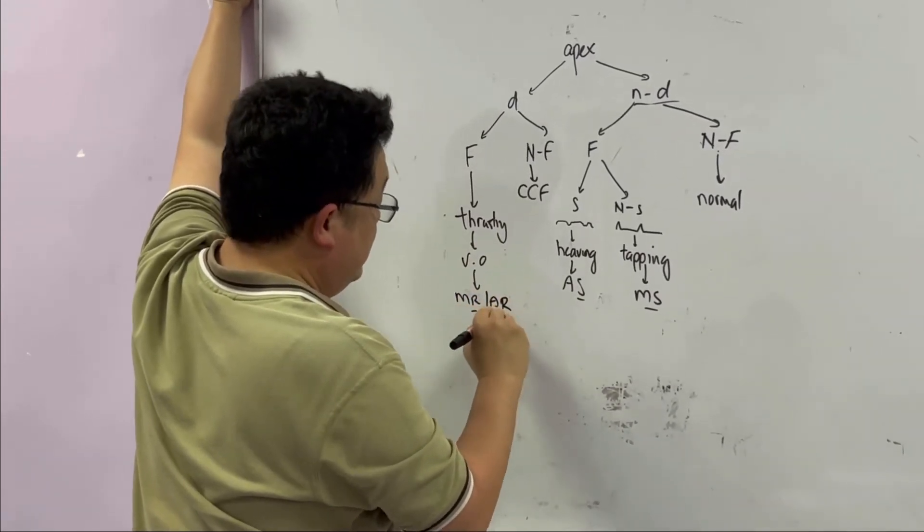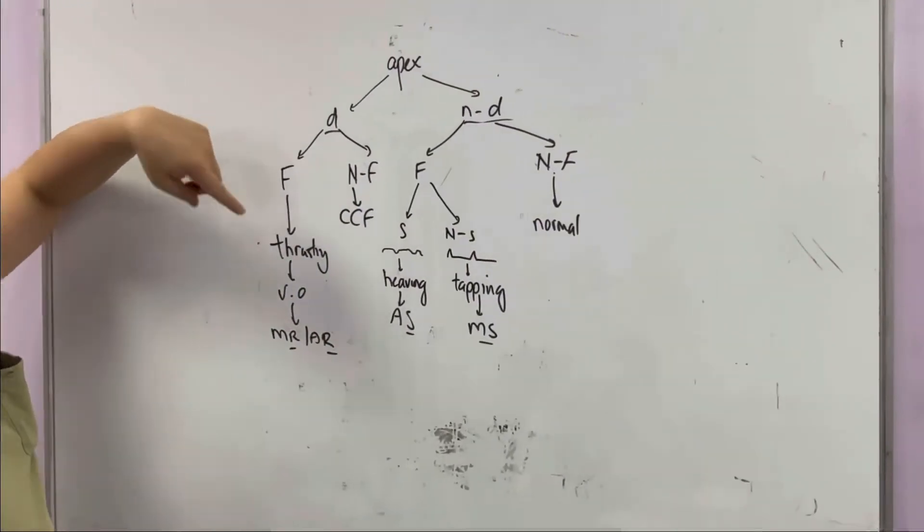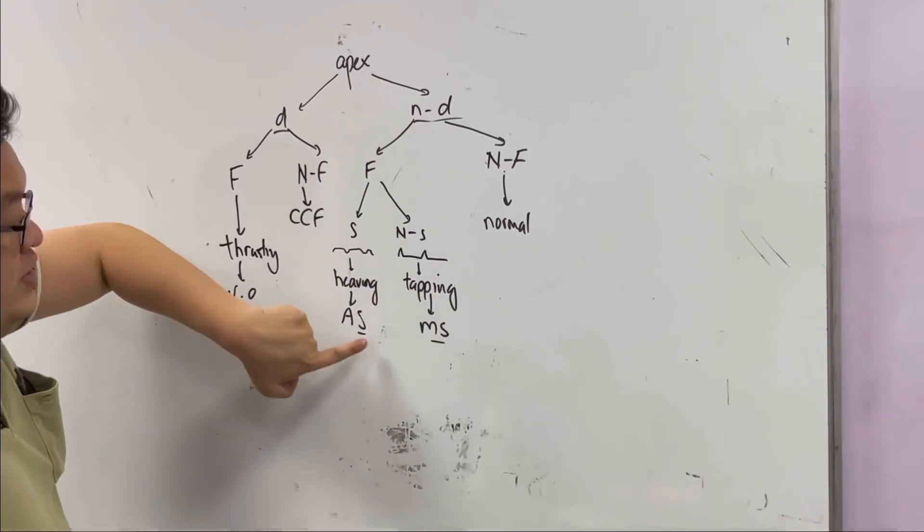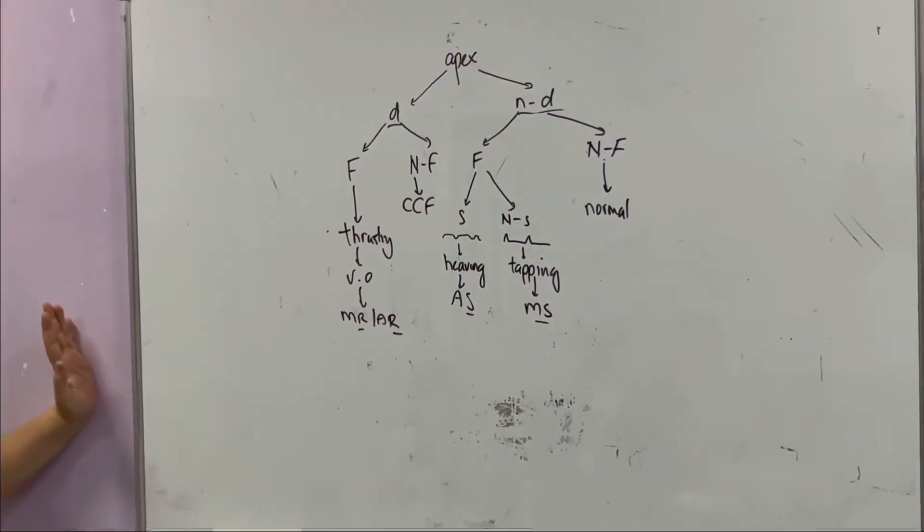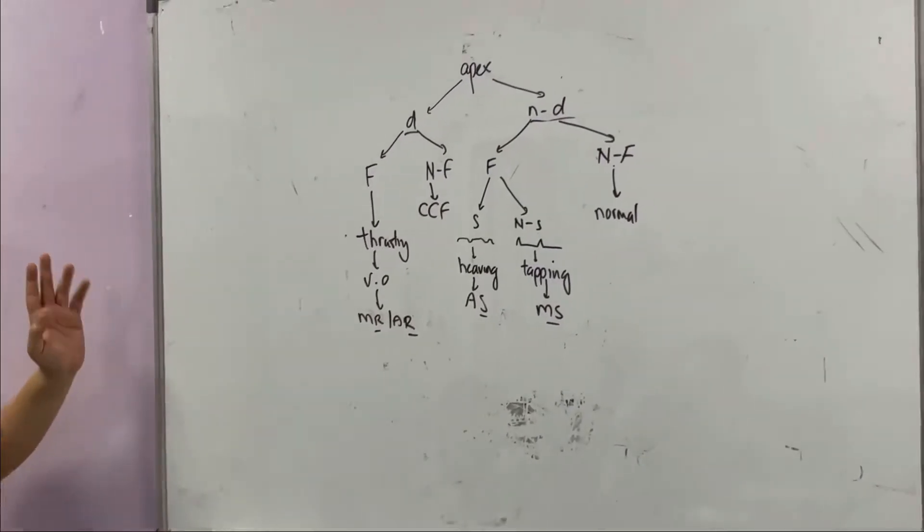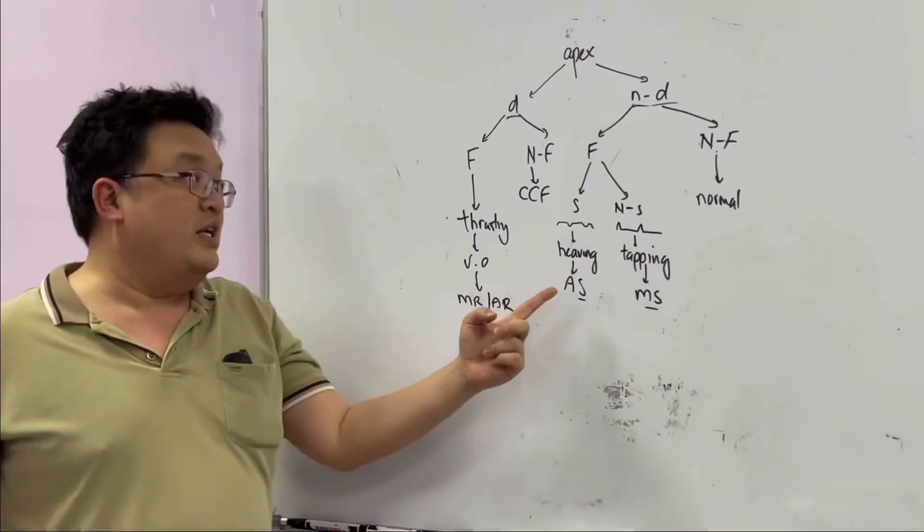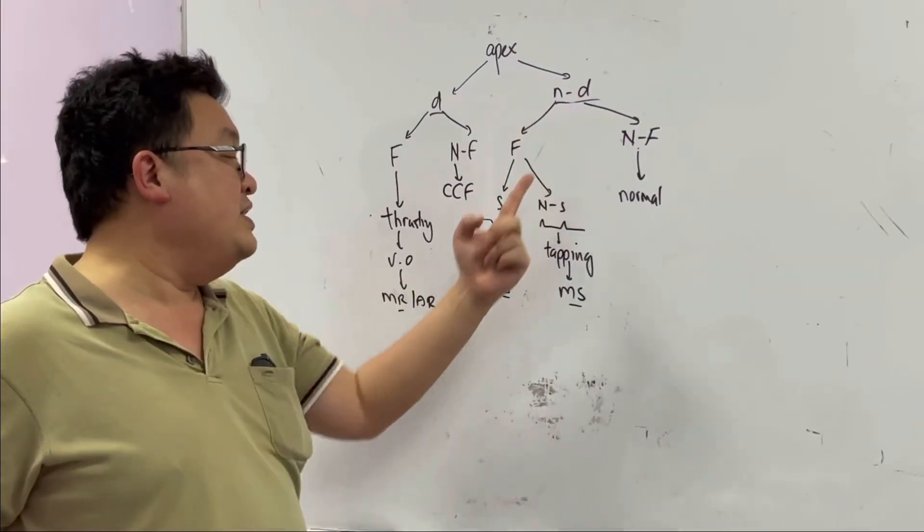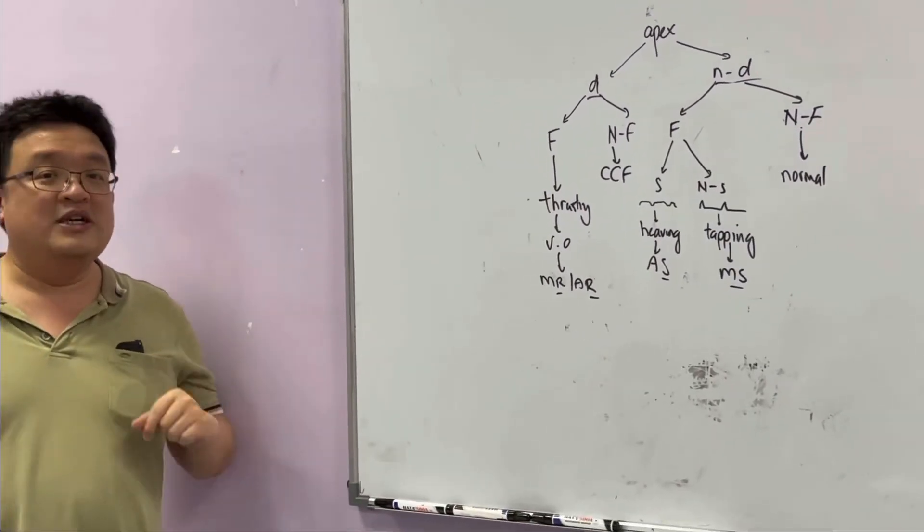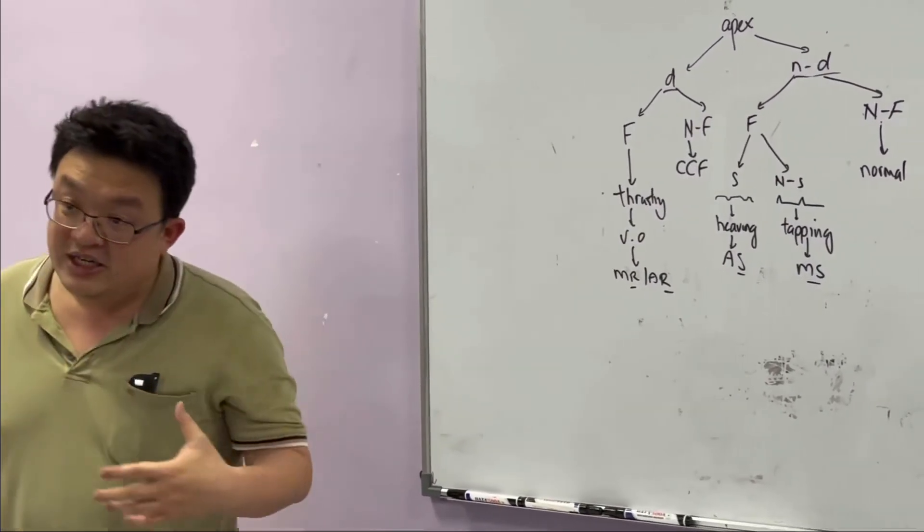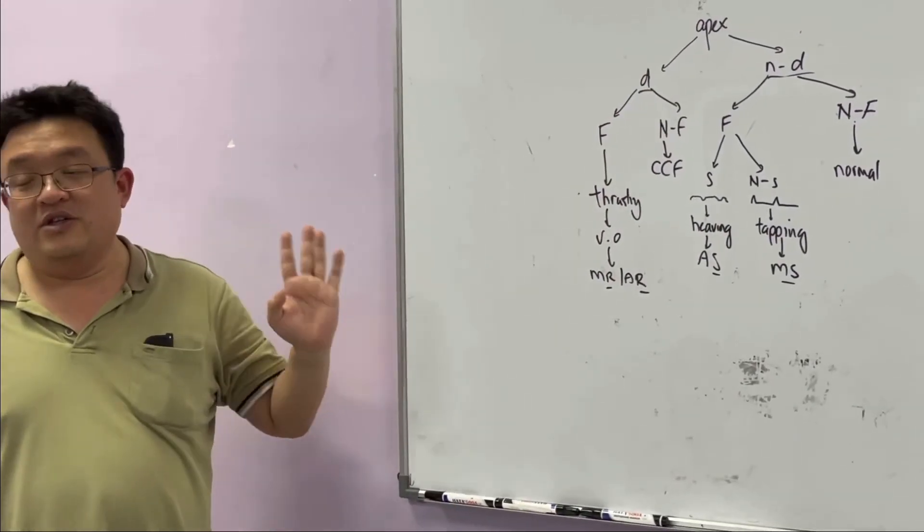Sometimes if you have an aortic regurgitation coexisting with an aortic stenosis, which one is dominant? You'll see the displaced. If the apex is displaced, then that AR is dominant. If the apex is not displaced, that means the AS is dominant. Dominance is determined by the apex. But by the time they come to you in the clinic, already in heart failure, most of the times already become displaced, so the dominance is towards the regurgitation one.